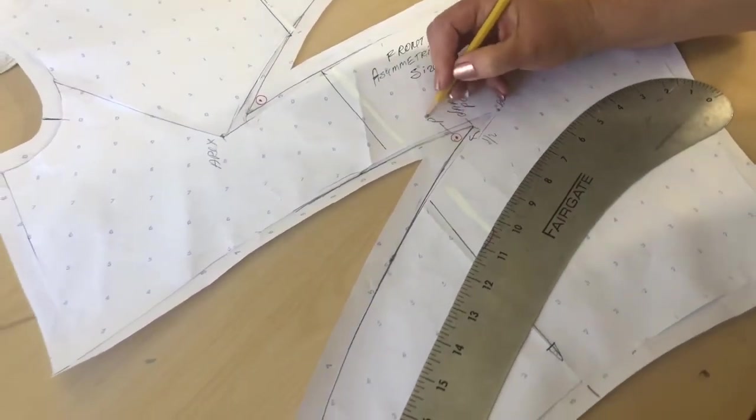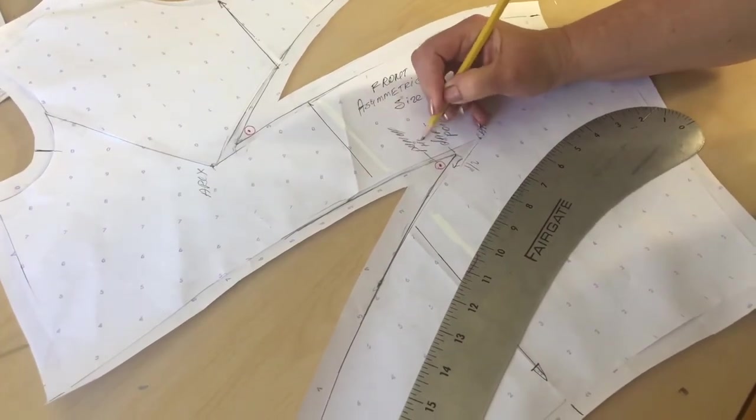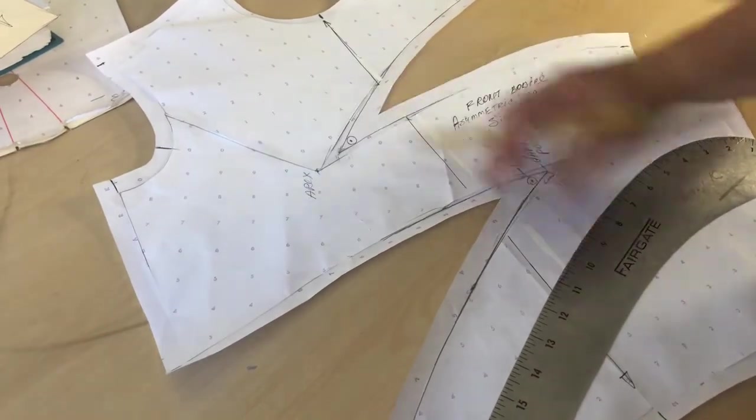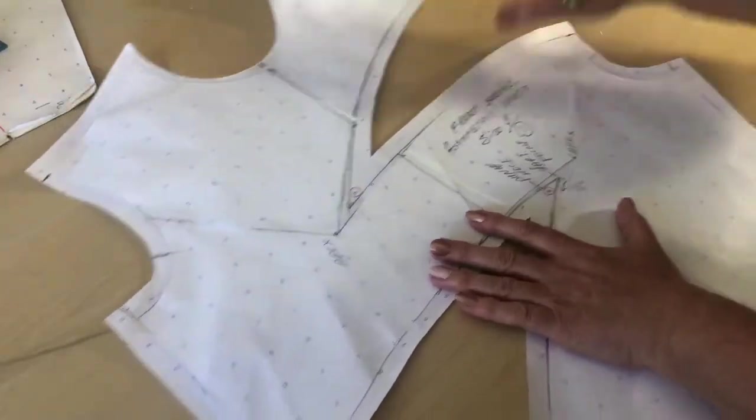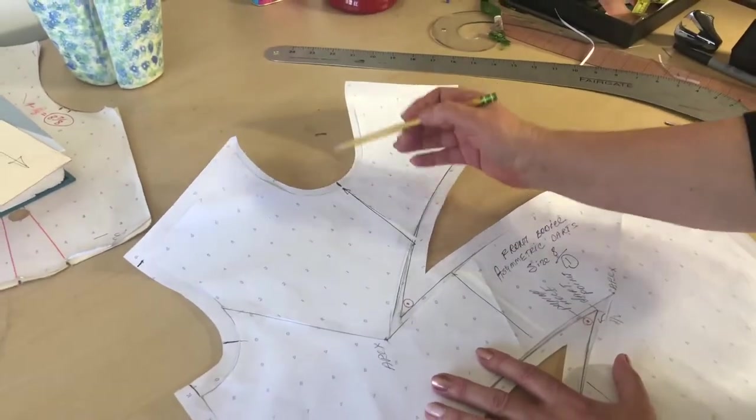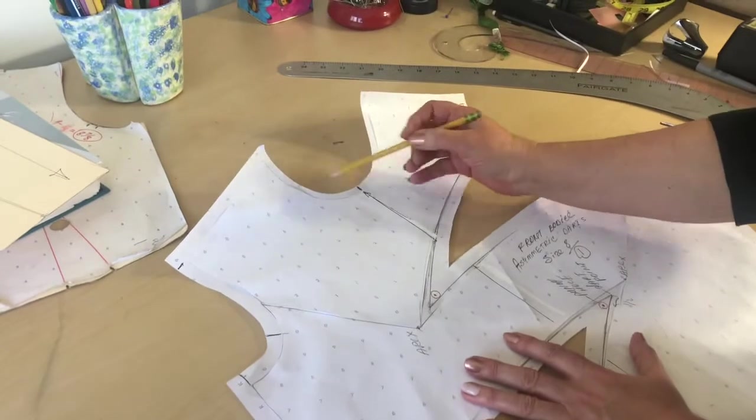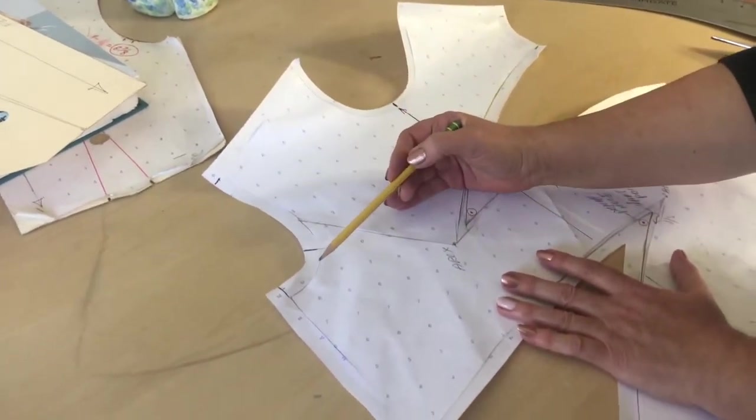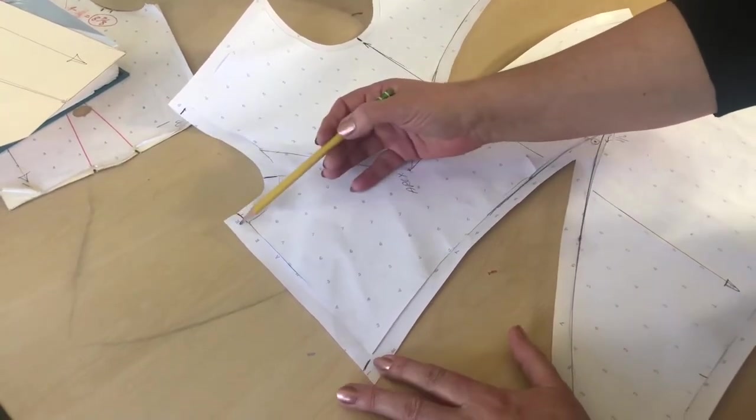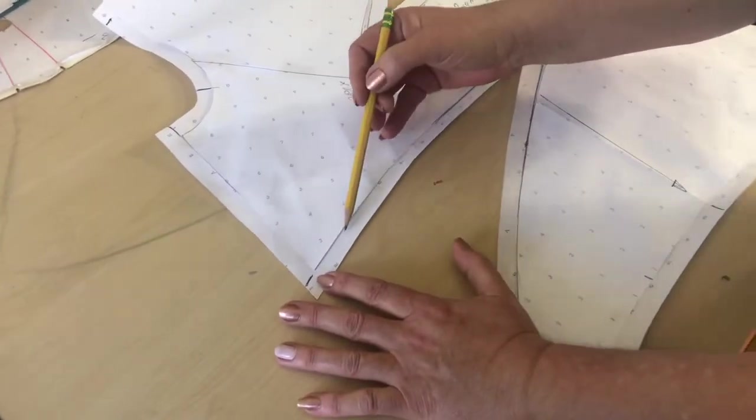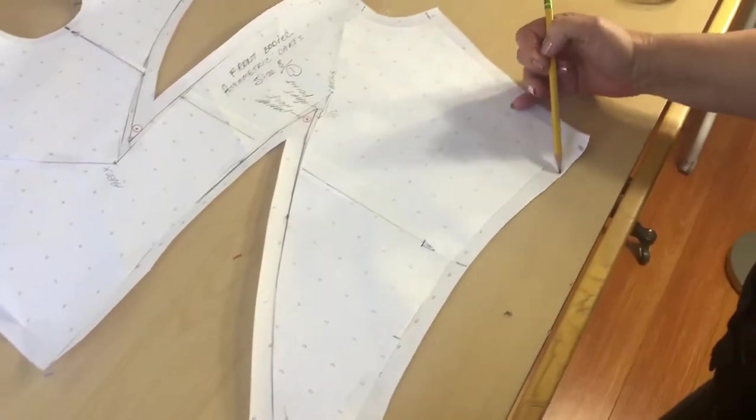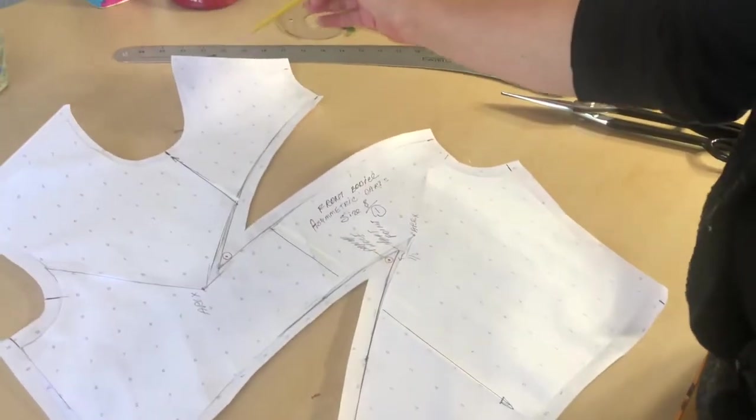The same is done with my second dart. Here I have added my seam allowances everywhere on my pattern. As usual we add quarter inch seam allowance at the neckline, half an inch at the shoulder, half an inch at the armhole since we're planning to stitch a sleeve to this garment, half an inch side seam, and my dart legs are cut with half inch seam allowances while my waistline is half an inch also. The same thing on the opposite side.